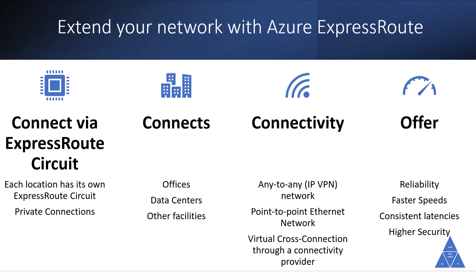Connectivity can be from an any-to-any IP VPN network, a point-to-point ethernet network, or a virtual cross-connection through a connectivity provider at a co-location facility. ExpressRoute connections don't go over the public internet, which allows them to offer more reliable, faster speeds, consistent latencies, and higher security than typical connections over the internet.